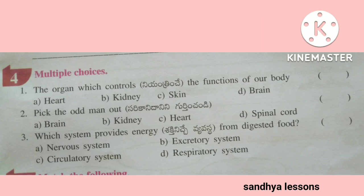Fourth, multiple choices: The organ which controls the function of our body is the brain. Pick the odd man out: spinal cord. Which system provides energy from digested food? Circulatory system.